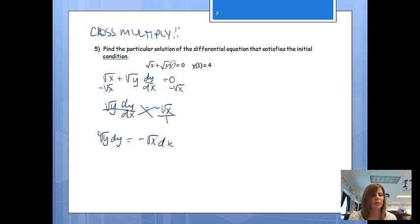From here, my variables are separated. To get rid of the derivatives, I now can take the integrals. So before I do that, though, now I'm going to change both of those to powers. So I'm going to get y to the 1 half dy is equal to negative x to the 1 half dx.